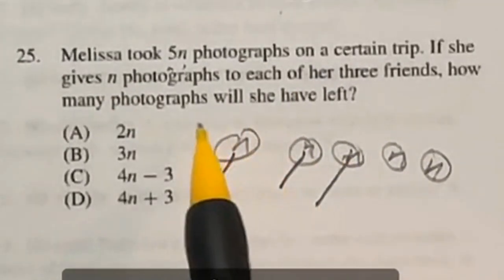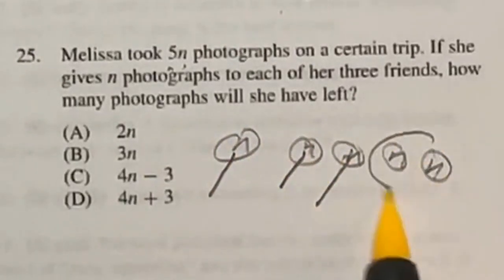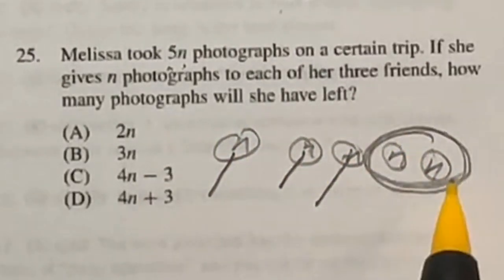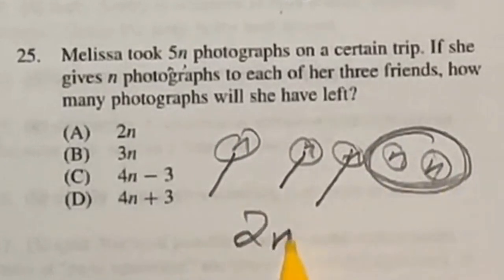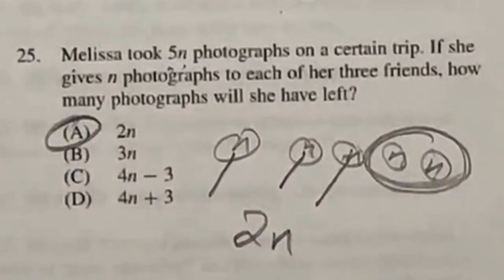So then it wants to know how many photographs you'll have left. Well, you still have 2 groups of those Ns left. So that means that you would have 2N photos left, which is answer A.